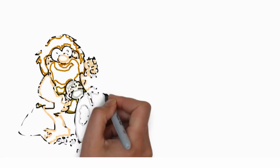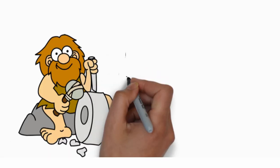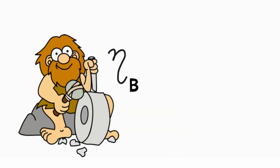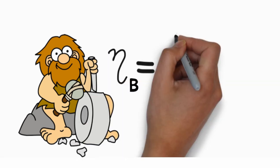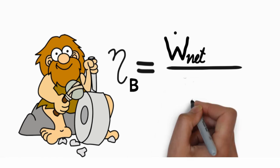For all engineering systems, this can be expressed as eta B equals W net upon m dot fuel into standard Gibbs free energy of reaction at temperature T and pressure P0, which is usually one bar.